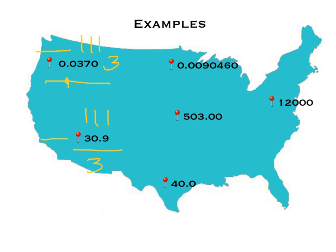For 0.0090460: the decimal is present, so we start on the Pacific side at the first non-zero. The leading zeros — 0, 0, 0 — don't count. We start counting at the 9, 0, 4, 6, 0, so this has five sig figs. For 503.00: the decimal is present, we start on the Pacific side at the first non-zero. How many sig figs does 503.00 have? If you said 5, you are correct.